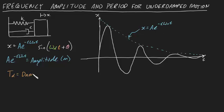T subscript d is the damped period in seconds, and it's defined as the time between any two adjacent crests.